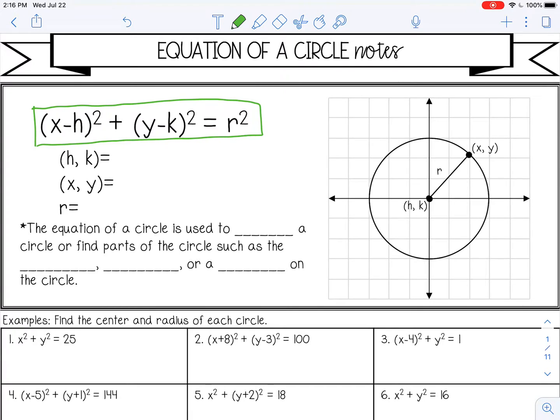Let's talk about what these different variables mean in our equation. First is the h and the k, and if you put those together as an ordered pair, they represent the center of the circle. So in this particular circle, the center is (0,0), but it can be anywhere on the coordinate plane.